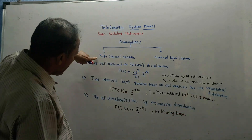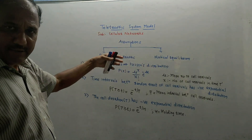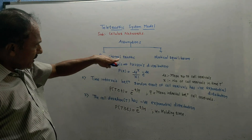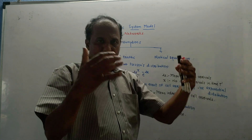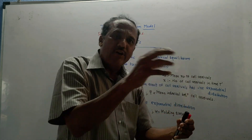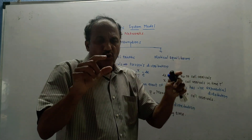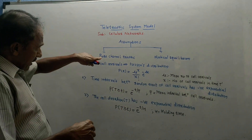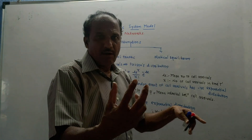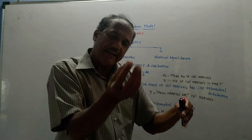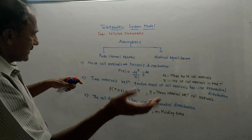The two assumptions for the mathematical model are: pure channel traffic and statistical equilibrium. For pure channel traffic, the number of calls arriving is an independent activity. You cannot predict at what time a call will arrive in the system — so it is a memoryless system because it is unpredictable and uncertain. Since there is no previous data by which you can predict call arrivals, it is purely independent of previous data — it is a memoryless system.